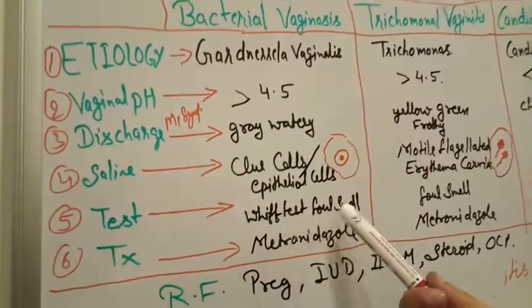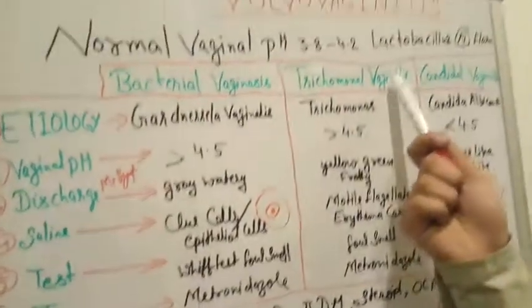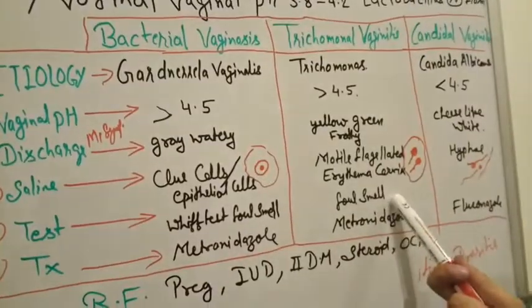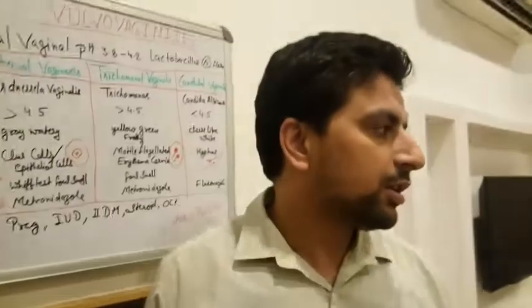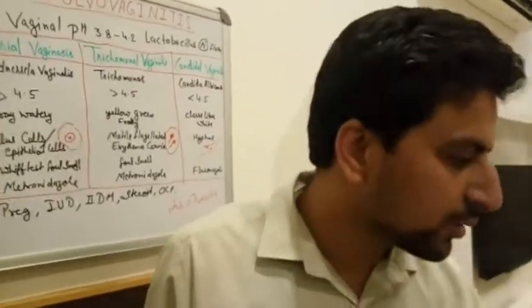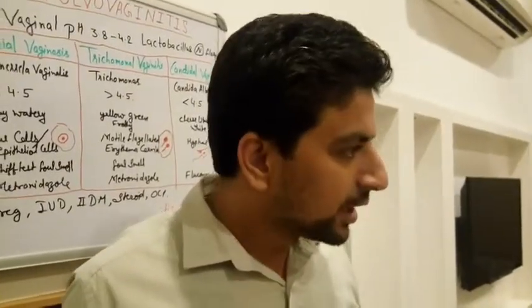The test for bacterial vaginosis is the whiff test, which detects a foul smell. In trichomonal vaginitis there is also a foul smell on testing.